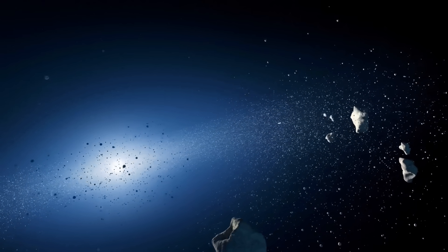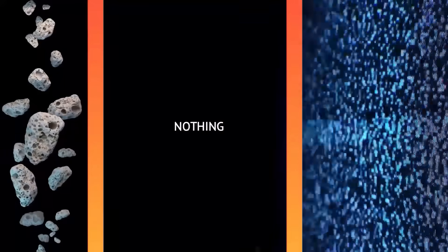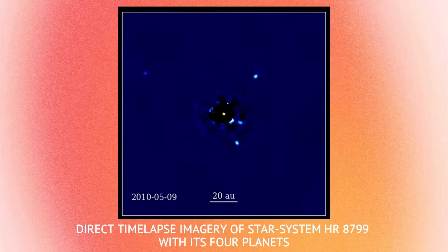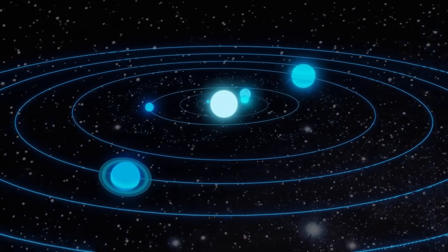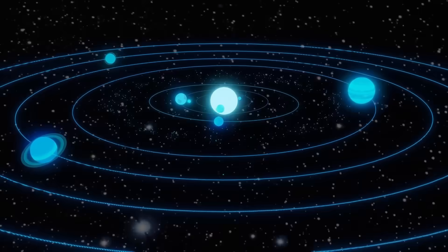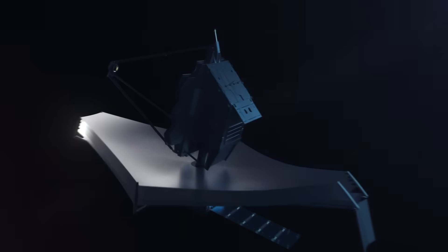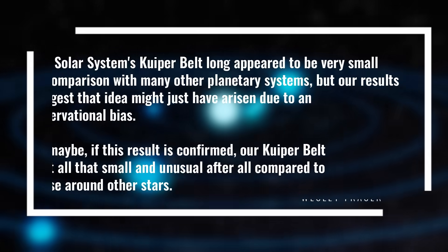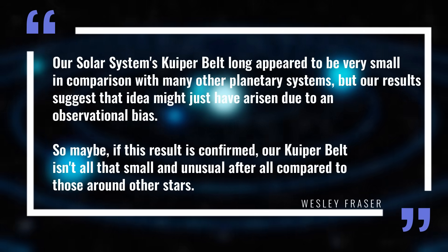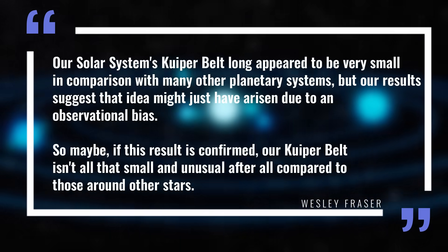They found that while it is lower than the inner regions, it is still dense enough to have or form a new structure. And between the Kuiper belt and the new found structure, there is a region where almost nothing has been found. Yes, a mysterious gap. But is it really mysterious, though? While it might seem a bit strange, such gaps are common in other forming planetary systems, aligning our solar system with what we've observed elsewhere in the galaxy. Many observations of the Milky Way suggest that our solar system is quite unique. Since it's the only known planetary system with life, these unusual features might play a key role in making the solar system habitable. But if the discovery of this structure is confirmed with more observations, it will tell us that our star system isn't that unique after all. Our solar system's Kuiper belt long appeared to be very small in comparison with many other planetary systems, but our results suggest that idea might just have arisen due to an observational bias, Fraser explained.